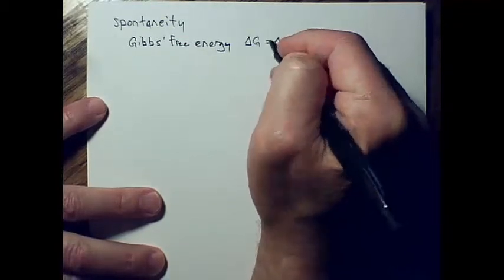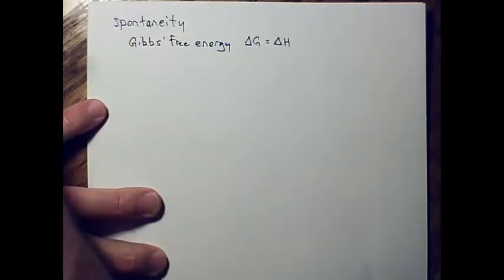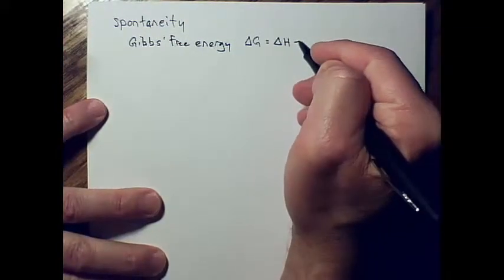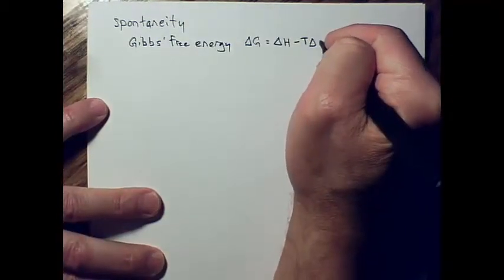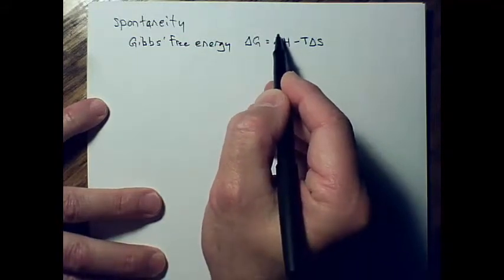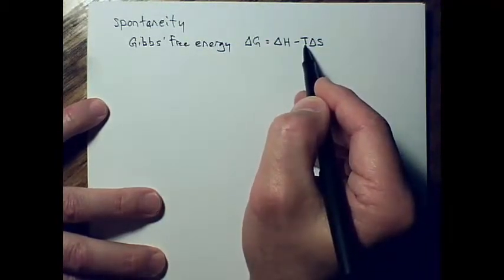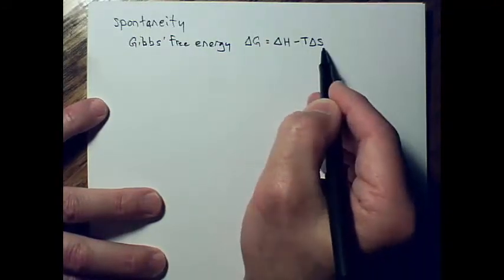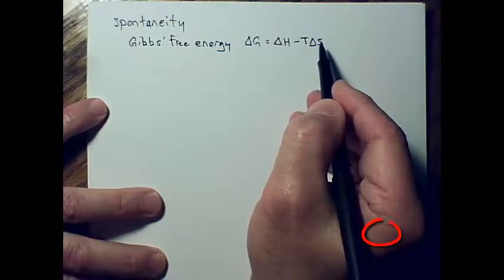Delta G is calculated as delta H minus T times delta S. Delta H is the energy stored in the system — the change in stored energy. We subtract the absolute temperature, which must be on the Kelvin scale, times the change in entropy. Entropy is a measurement of disorder.